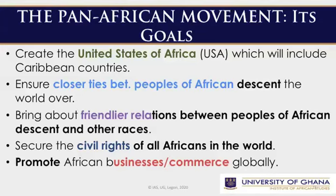What are the goals of the Pan-African movement? One was to create a United States of Africa, which should include the Caribbean countries. The second, to ensure closer ties between peoples of African descent the world over. Third, to bring about friendlier relations between peoples of African descent and other races. Fourth, to secure the civil rights of all Africans in the world. And lastly, to promote African businesses and commerce globally.